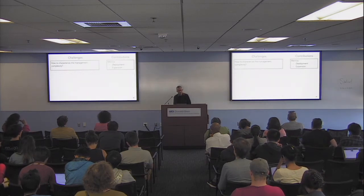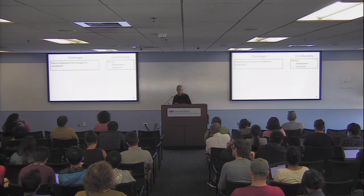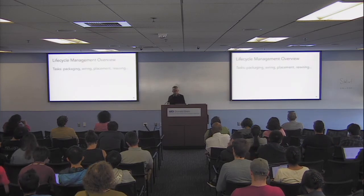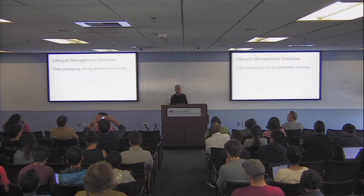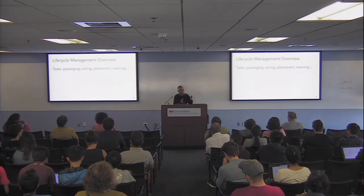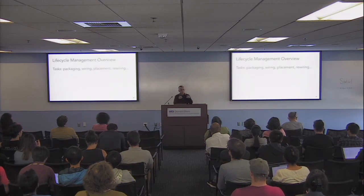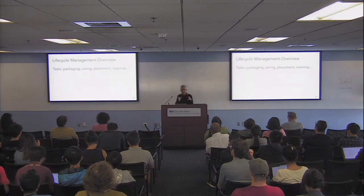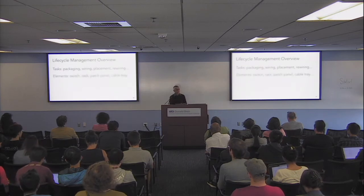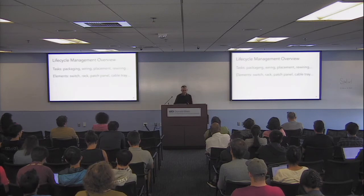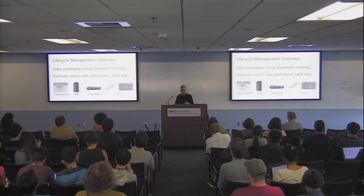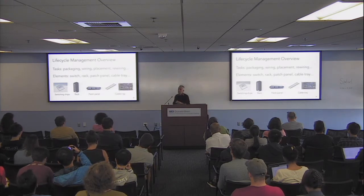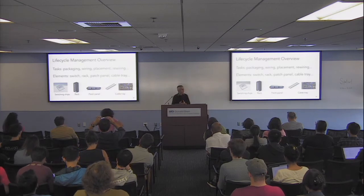I'll start by explaining how to characterize management complexity. We looked at exactly how these networks are built — what people do when they deploy or expand a network. They're packaging parts of the network into racks, wiring those racks, placing them on the floor, rewiring them. The elements they work with are switching chips, racks, something called a patch panel, and cable trays.